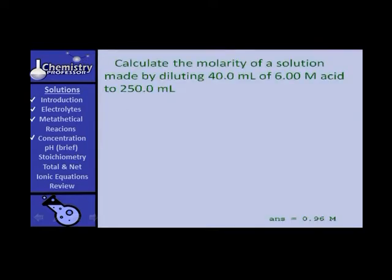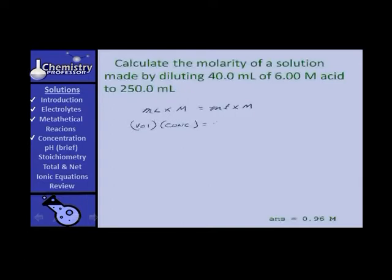In this problem, we're asked to calculate the molarity of a solution made by diluting 40 milliliters of six molar acid to 250 milliliters. A lot of people like to use formulas, so let's use: milliliters times molarity equals milliliters times molarity. You could also write this as volume times concentration equals volume times concentration.